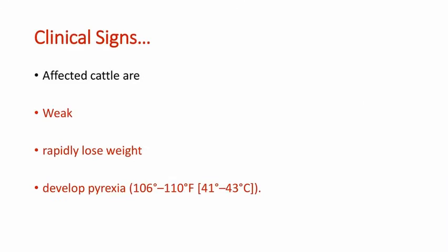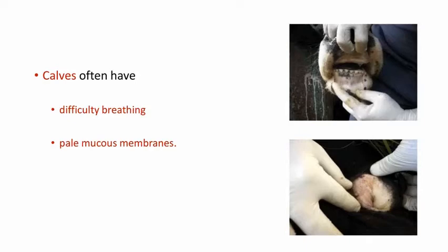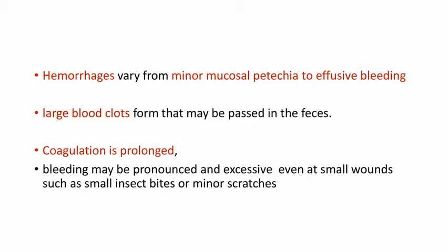Coming to the clinical signs of Enzootic Hematuria: affected cattle are weak, they rapidly lose weight and develop pyrexia of 106 to 110 degrees Fahrenheit. In calves, they often have difficulty breathing and pale mucous membranes. In these pictures you can see petechial hemorrhage and pallor in mucous membranes. Hemorrhages vary from minor mucosal petechiae to effusive bleeding. Large blood clots form and may be passed in the feces. Coagulation is prolonged and bleeding may be pronounced and excessive even at small wounds such as insect bites or minor scratches.